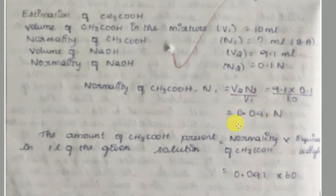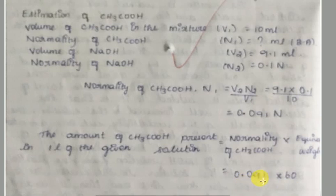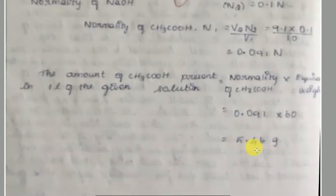The amount of acetic acid present in one liter of the given solution equals normality of acetic acid × equivalent weight of acetic acid. That is 0.091 × 60 = 5.46 grams per liter. We multiply to get the weight of acetic acid: 5.46 grams.